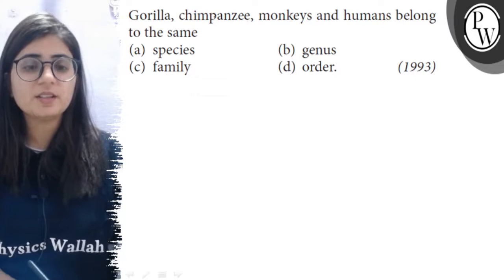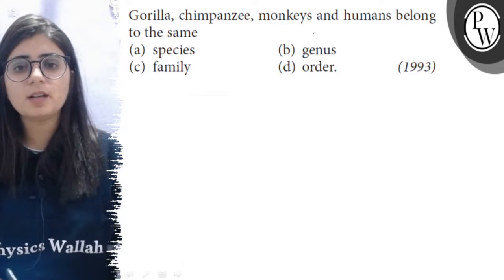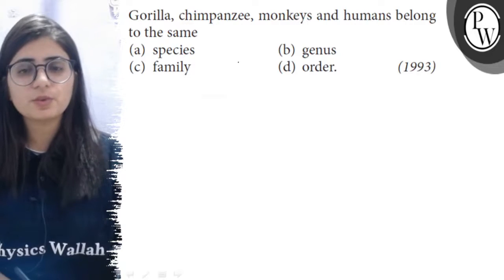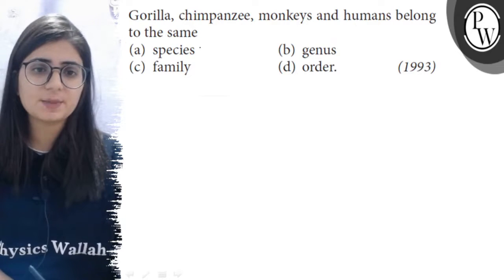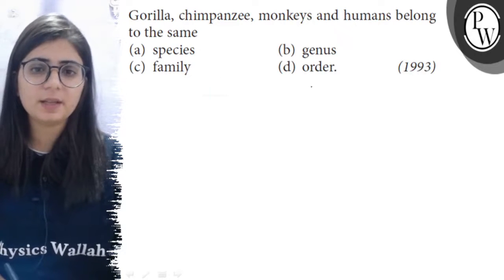Hello bachon, let us see the question. Gorilla, chimpanzee, monkeys and humans belong to the same: A. Species, B. Genus, C. Family, or D. Order.